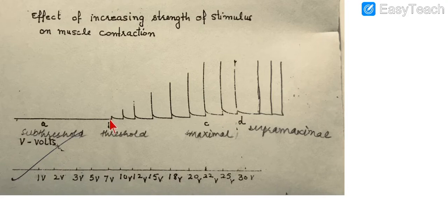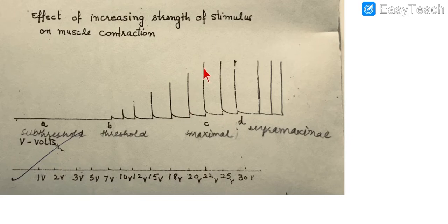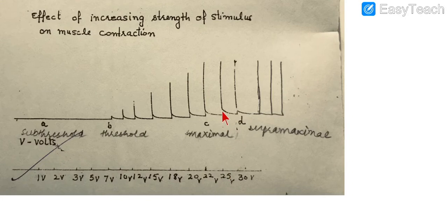When we provide the seven-volt stimulus, we just get the slightest flicker — it means the muscle is contracting. Now we keep on increasing and the height keeps on increasing, meaning if we keep on increasing the strength of the stimulus, the height of the muscle contraction keeps on increasing. It increases to a certain point — this is called the maximal stimulus. The strength of the stimulus is 22 volts in this diagram, where we get the maximal response. If we further increase the strength from 22 to 25 or 30 volts, there is no further increase in the height of the contraction.